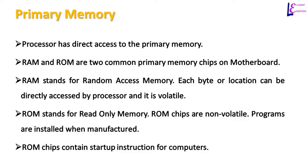RAM stands for Random Access Memory, which means each byte or location can be directly accessed by the processor. RAM allows us to change data or instructions while the computer is on. Since RAM is volatile memory, if the computer is turned off, data and instructions will be erased from the memory.